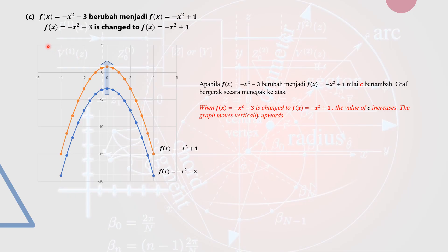Part C: −x² − 3 changes to −x² + 1. The coefficient 'a' remains unchanged and is negative, so it is a sad face. The constant c increases from −3 to +1. The parabolic curve shifts vertically upwards. Conversely, if c decreases from 1 to −3, the curve shifts vertically downwards. That is the third example.